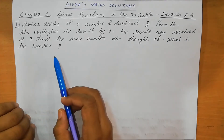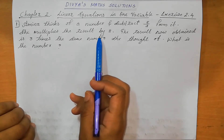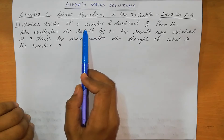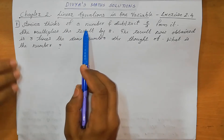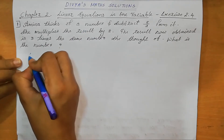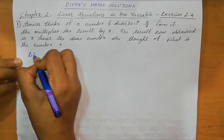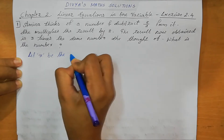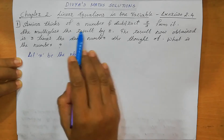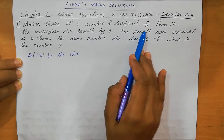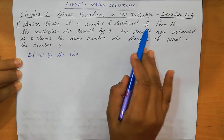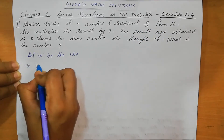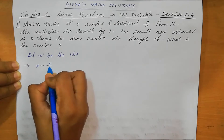Question number 1. Amina thinks of a number and subtracts 5 by 2 from it. So what is the number she thinks? That one we can take it as X. So let X be the number. Subtract 5 by 2 from the number — the number now becomes X minus 5 by 2.